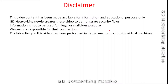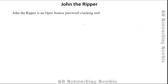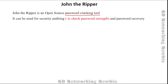Hi everyone. Before starting the video, a short disclaimer: the information in this video is made available for educational purposes only and should not be used for any illegal or malicious activity. We are going to discuss a very important tool in ethical hacking — John the Ripper. It is an open source password cracking tool used for security auditing, for example to verify that users in an organization are really using strong passwords, or for password recovery if you forget a password.